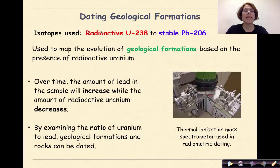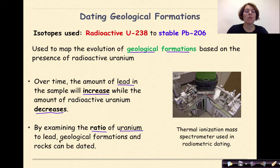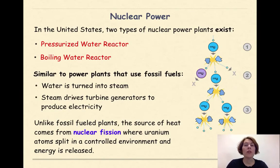Dating geological formations: the isotope used is radioactive uranium-238, which decomposes into stable lead-206. It is used to map the evolution of geological formations based on the presence of radioactive uranium. Over time, the amount of lead in the sample will increase while the amount of radioactive uranium will decrease. By examining the ratio of uranium to lead, geological formations and rocks can be dated.